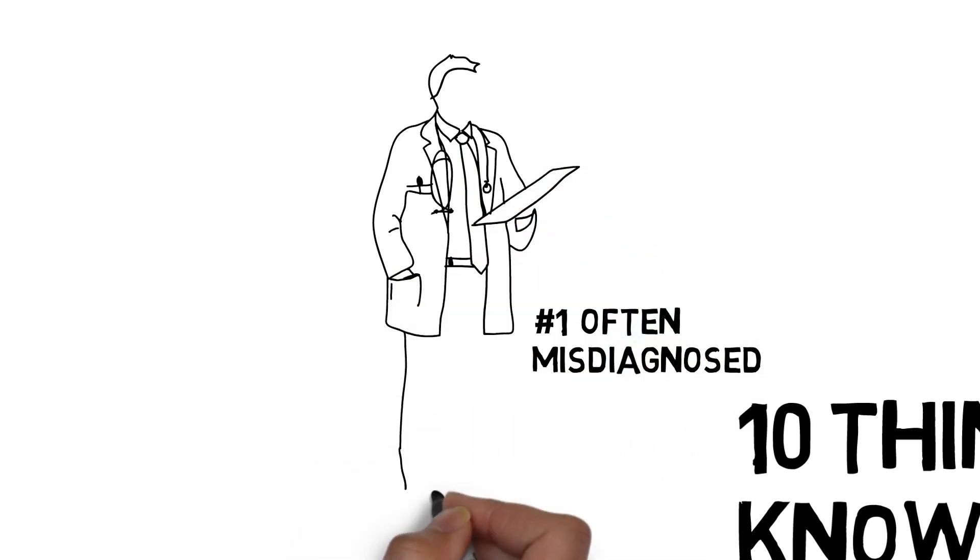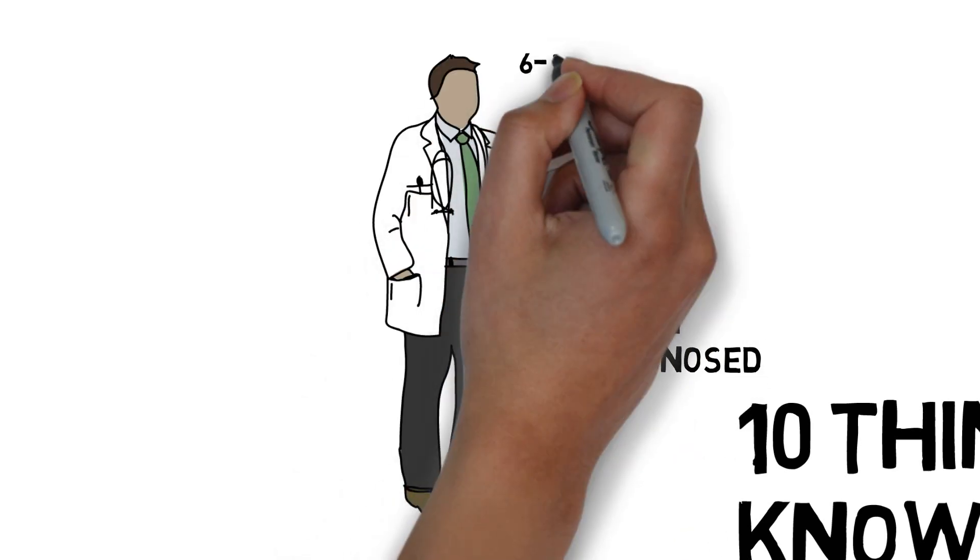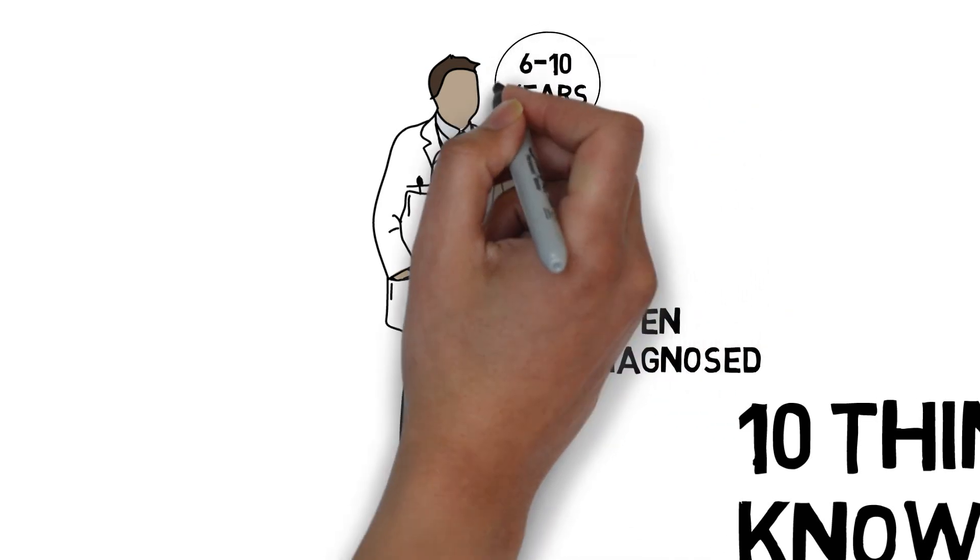It can take years before celiac disease is diagnosed correctly. In fact, the average celiac disease patient has to wait 6 to 10 years before they are correctly diagnosed.